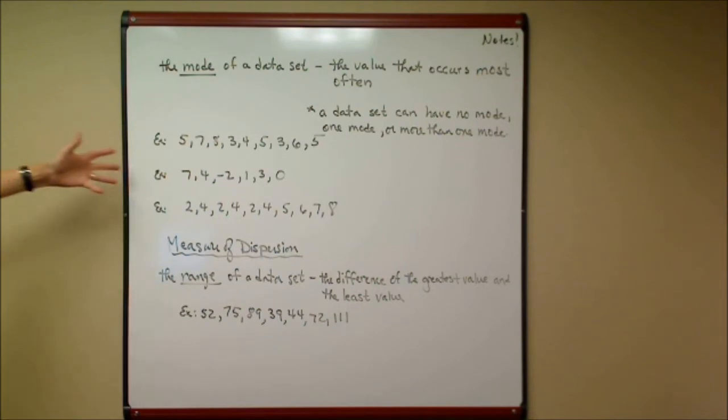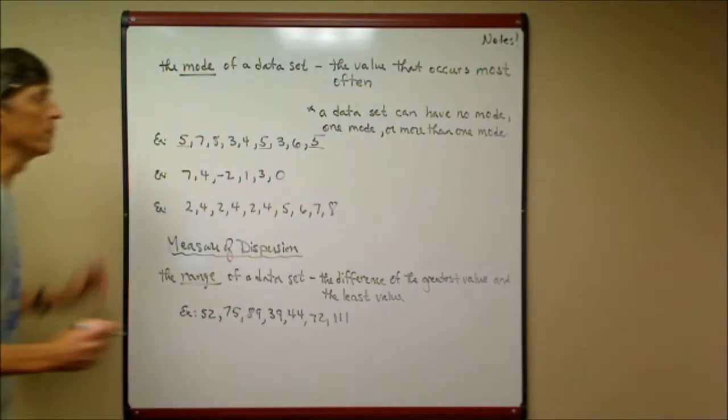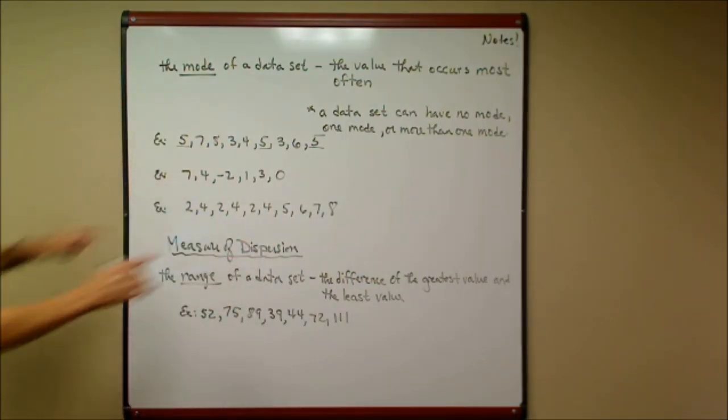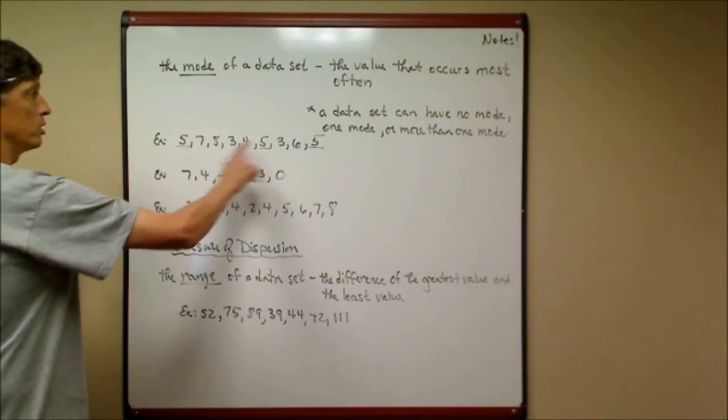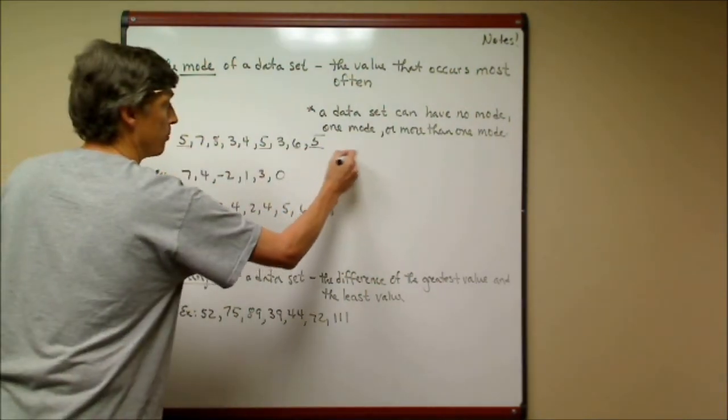I have three examples. If you look at the first example, five, seven, eight, three, four, five, three, six, five, you can see that the five is repeated three times. Now granted there are two threes, but the most common, the most often would be the five, and that would be the mode.